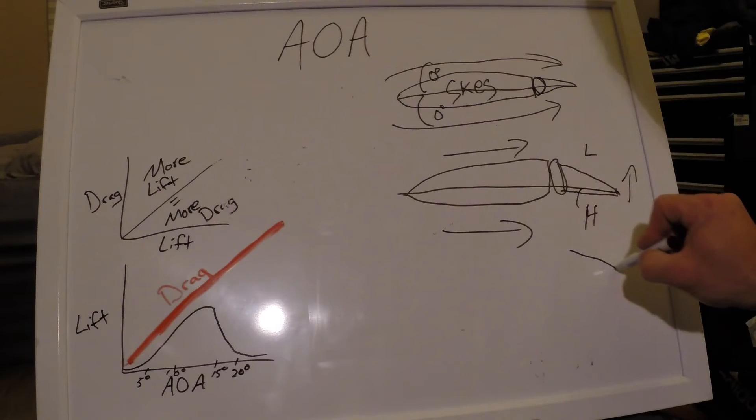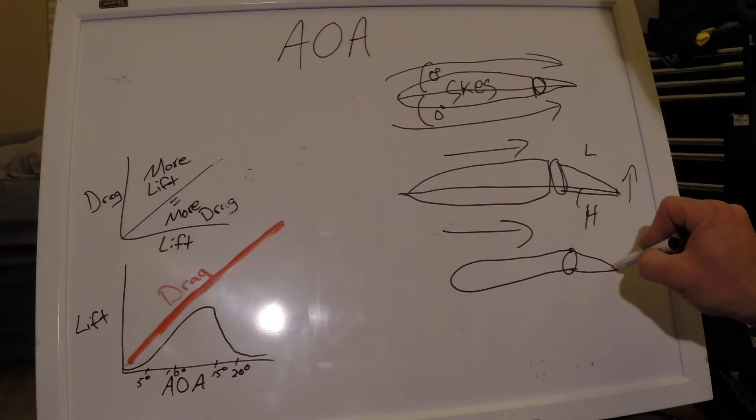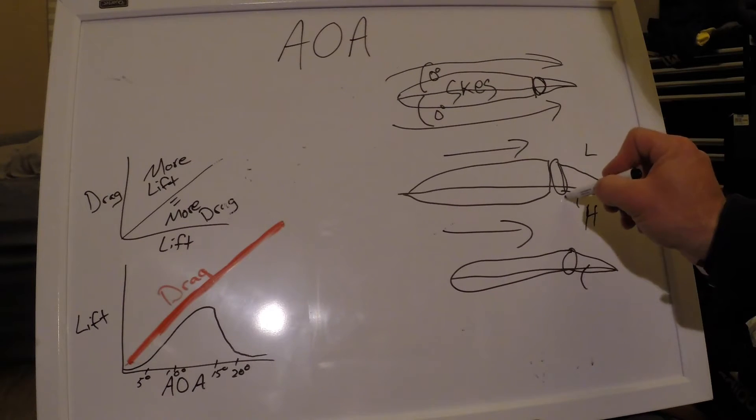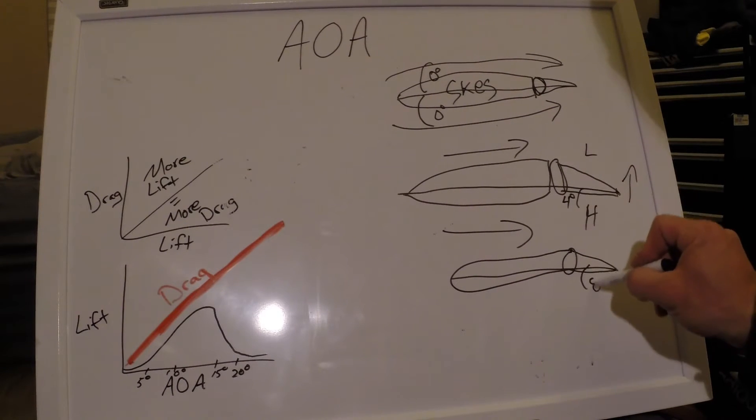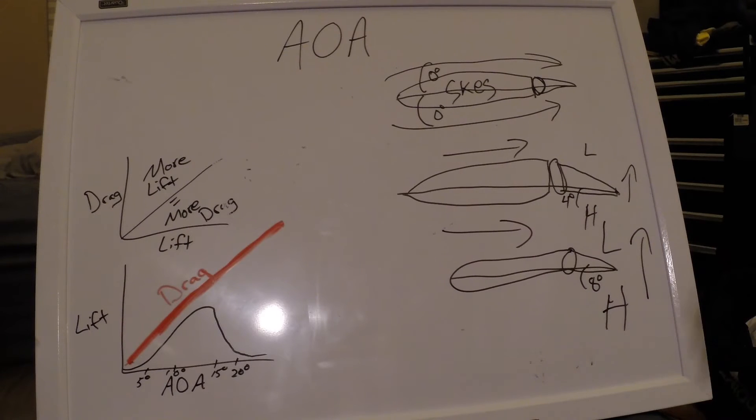If we increase our rudder there, we could generate more lift. We have a greater angle of attack here. Maybe we'll call this four degrees, we'll call this one eight degrees, and so we're going to have a bigger high pressure and a bigger low pressure and have more lift. The boat will turn sharper.